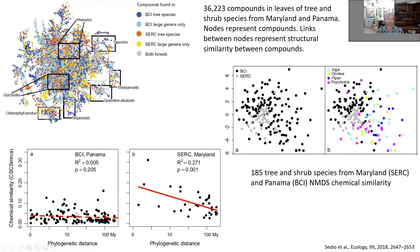When looking at the phylogeny of plants and their chemical composition, the tropical study found no significant relationship between phylogenetic distance and chemical similarity once looking at tens of thousands of compounds. If you pick one trait like latex, you can find some phylogenetic signal. But once dealing with the whole diversity, the signal disappears for the tropics. It was slightly different for Maryland, where more phylogenetically distant species were also less chemically similar.